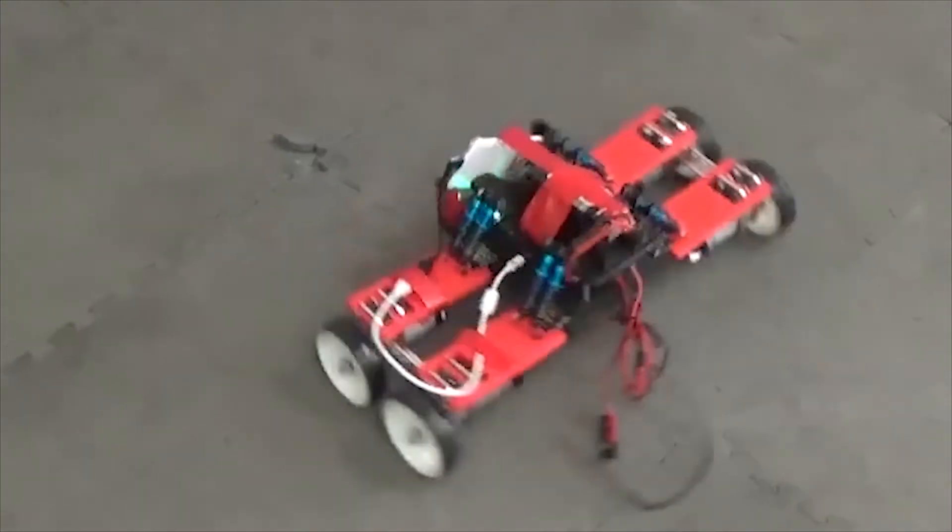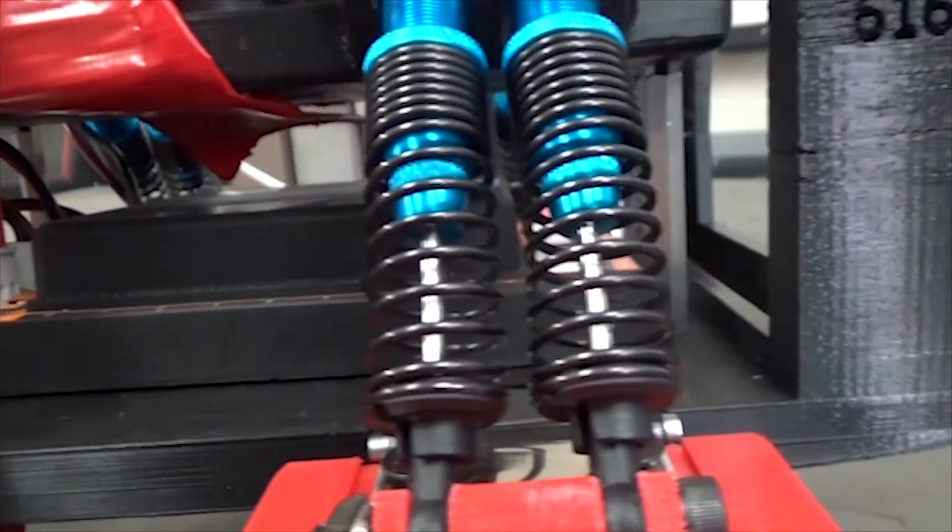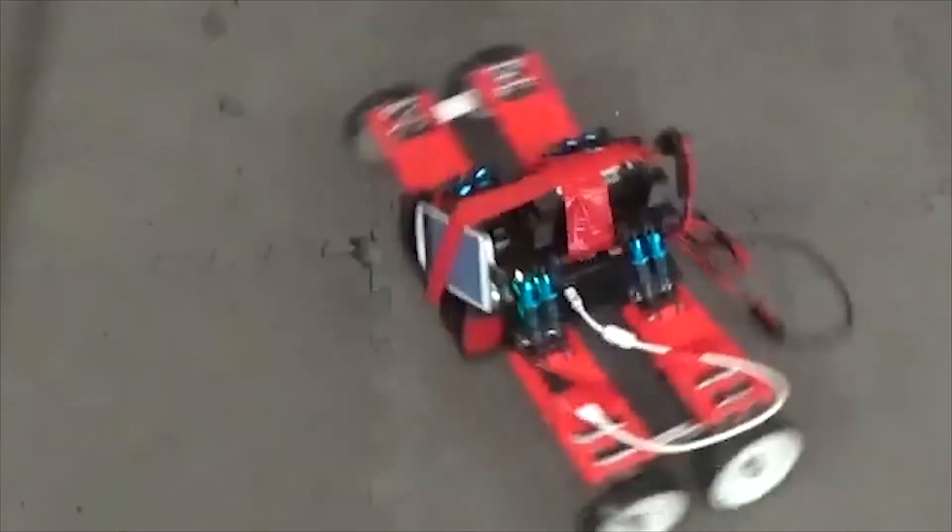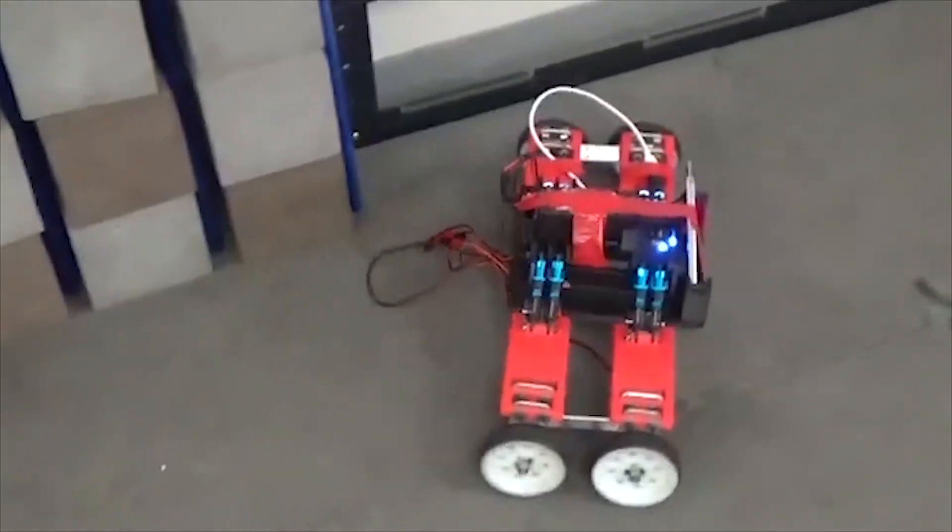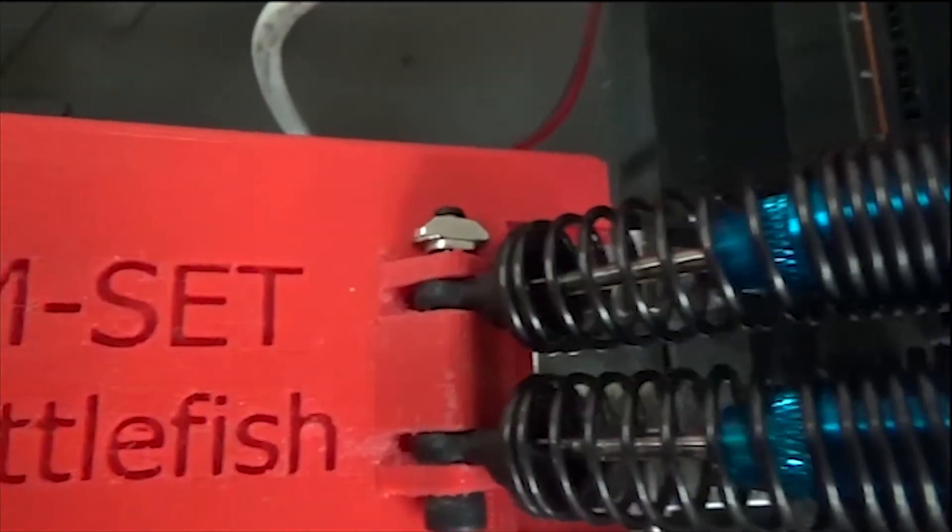We added suspension on it, so on each of the legs of our robot, there's two suspensions. They allow each wheel to move independently, but we found that this made the robot tip a little bit more than it should.